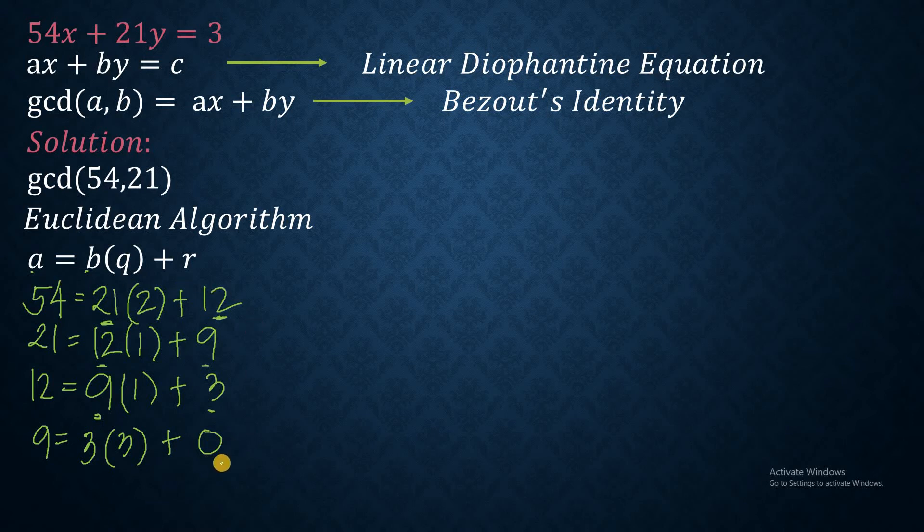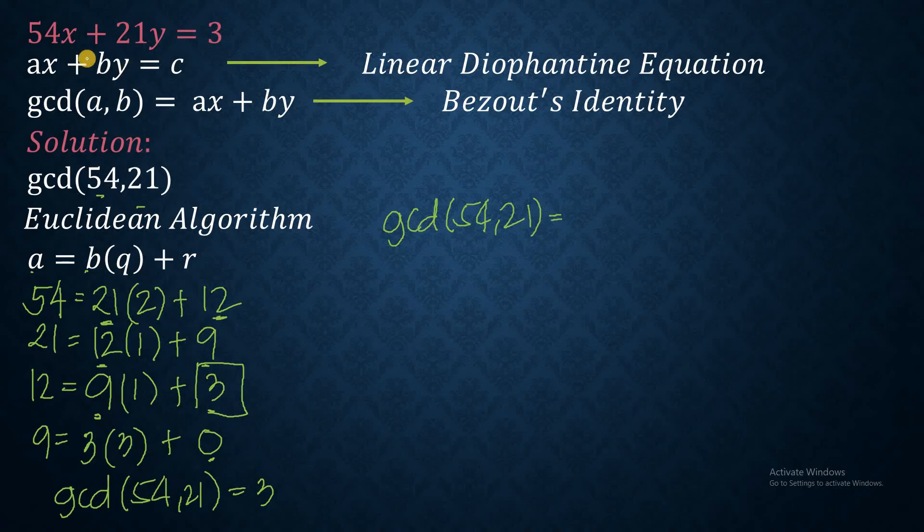So there you go. This is now the complete Euclidean algorithm, where we end up with a 0 remainder. So if that's the case, then the GCD of these numbers 54 and 21 is now equal to this value here, 3. It's the remainder before the 0 remainder. Now notice that the GCD is exactly the value of the right side of this equation. So we can then conclude that the GCD of 54 and 21, which is 3, is exactly equivalent to 54x plus 21y. Now the question is, what is then now the value of x and y?